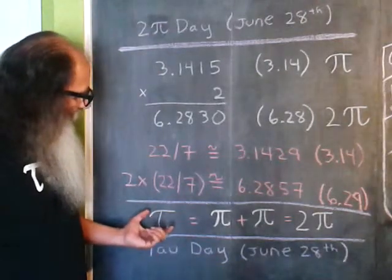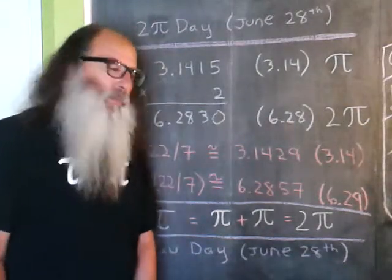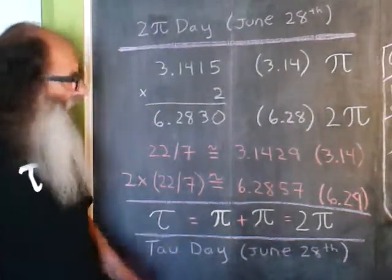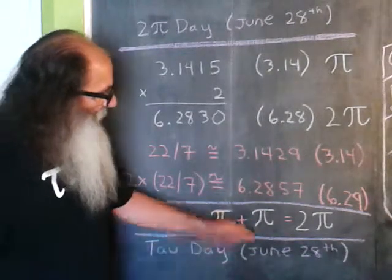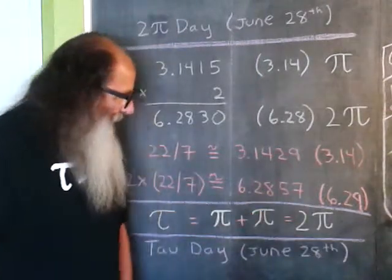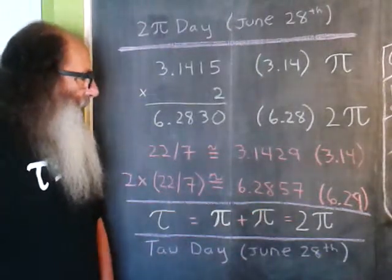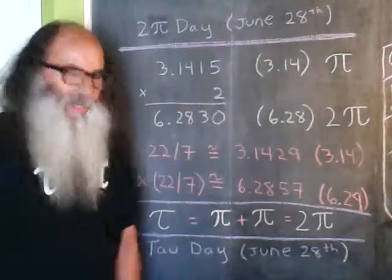There are people wanting to take the Greek character tau and have it equal 2π. In other words, τ = π + π, which is 2π. So June 28th is also considered tau day.